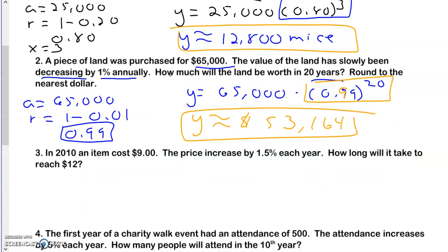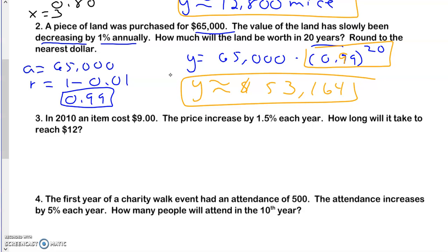Taking a look at the next one. An item in 2010 cost $9. The price is increasing, woo-hoo, 1.5% each year. How long will it take to reach $12?